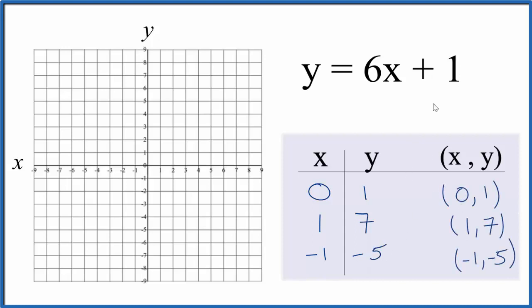So these are the points that we'll graph for the linear equation y equals 6x plus 1. So let's start by putting 0 and 1. Let's graph this point here. So we find 0 on the x, we go up 1, there's our first point. We have 1 and 7. So we go over 1 on the x, and then up 7 on the y, and we have two points.